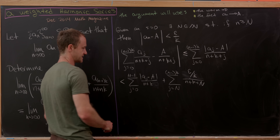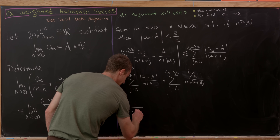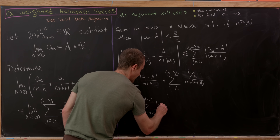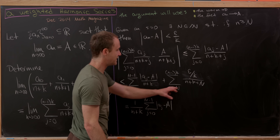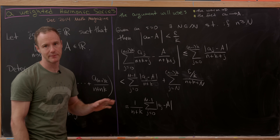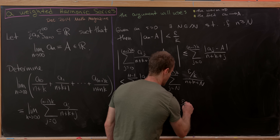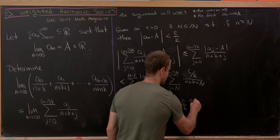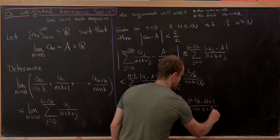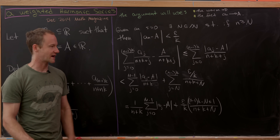Rewriting, we get: (1/(n·k)) times the sum from j = 0 to N−1 of |aⱼ − A|, plus (ε/k) times ((n−1)·k − N + 1)/(n + k + N). The first piece has a factor of 1/(n·k), and the sum inside is a fixed finite number not depending on n. The second piece is ε/k times a ratio whose leading terms are (n·k)/n = k, so the ε/k cancels with k.